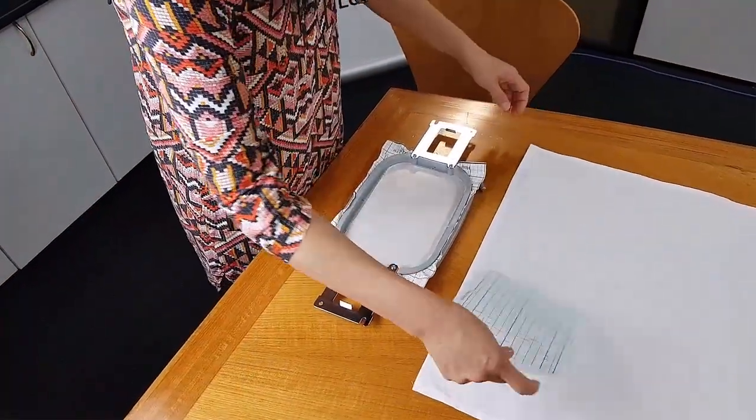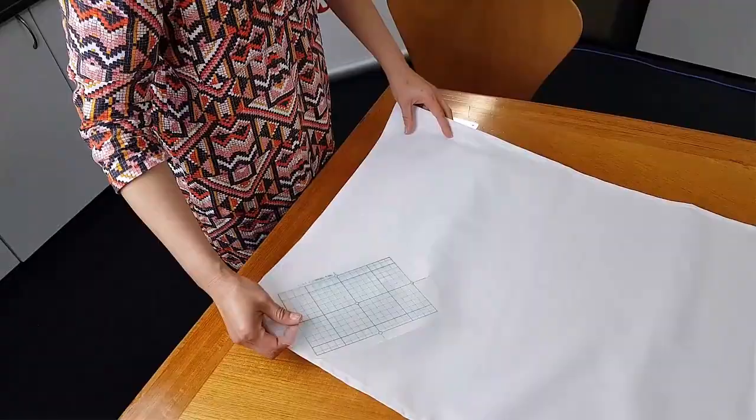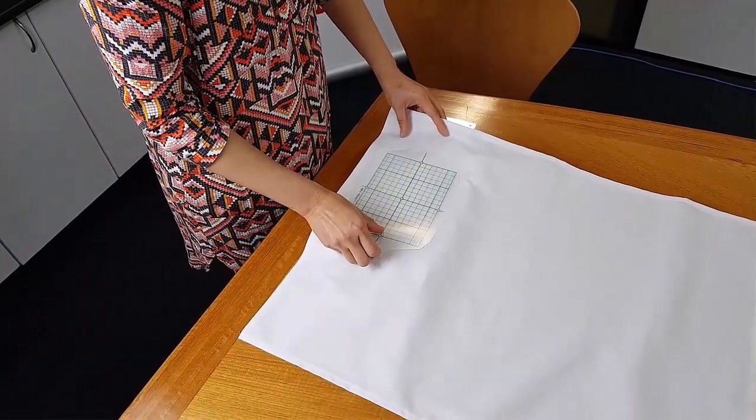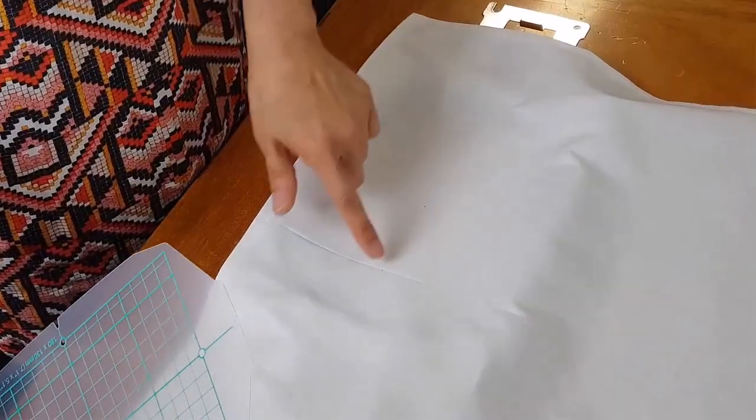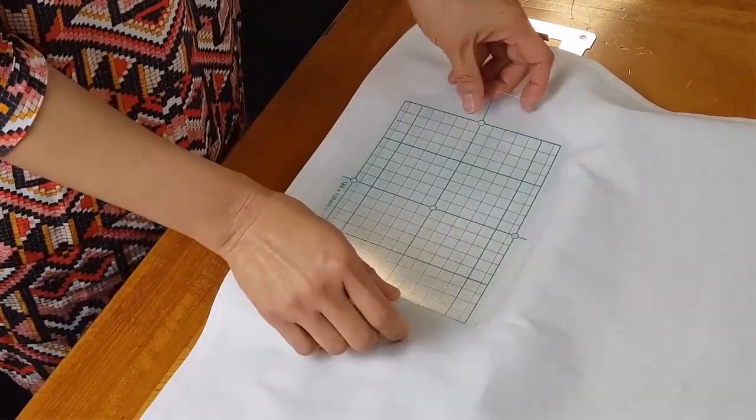Now, using the positioning template, locate the centre of the first hooping. Place the template centre directly over the hooping centre.